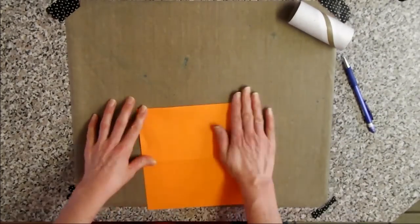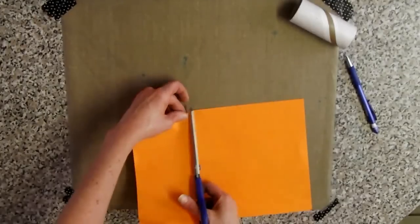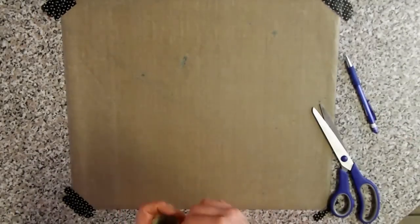I started off by making a paper template that will fit around my cardboard roll that I will be using to make a stamp roller.